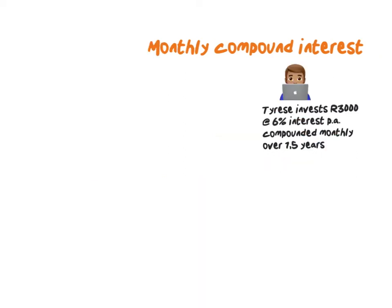The last way we could be asked to do compound interest is monthly. If we need to split 6% interest per annum into 12 equal payments, that's 6% divided by 12 months, giving 0.5% interest per month. The time period is one and a half years, so how many months is that? In the first year, 12 months; in the half year, 6 months — meaning 18 months in total.